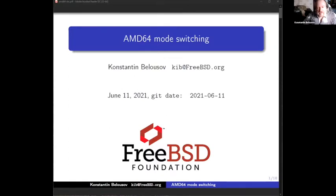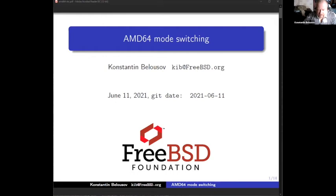For external observers, it might be surprising that this thing occurs for such an old and established architecture. It is not as stunning as, for instance, the release of ARM V9 architecture, but it's still a curious event and I will try to explain what and why it happens and how it affects operating systems, in particular FreeBSD. The thing that I will talk about is context switching.